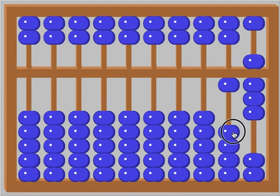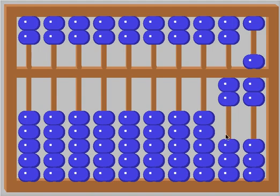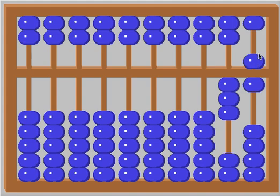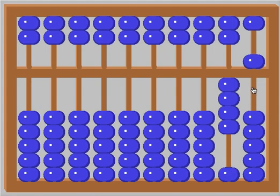Isn't 9 really 10 minus 1? 5, 6, 7 — 27. Let's add another 9. Isn't 9 really 10 minus 1? 30, 5, 6. This is nothing new. Let's add 9. Isn't 9 really 10 minus 1? 45.